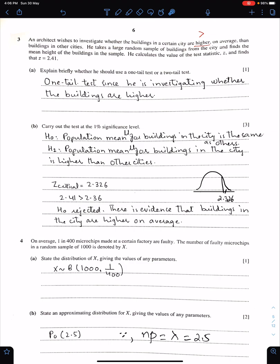Part B: Carry out the test at 1% significance level. 1% means the corresponding Z value is 2.326. We just need to compare this critical value of Z with this Z test. Before that, we need to mention H0 and H1. H0 means population mean mu for buildings in the city is the same as others. That means mu is same. And this means mu is increase in the city is higher than other cities. Z critical is 2.326. Z test is 2.41. By comparing 2.41 with 2.326, we have this result: 2.41 lies in critical region. That means H0 is rejected. There is evidence that buildings in this city are higher on average.